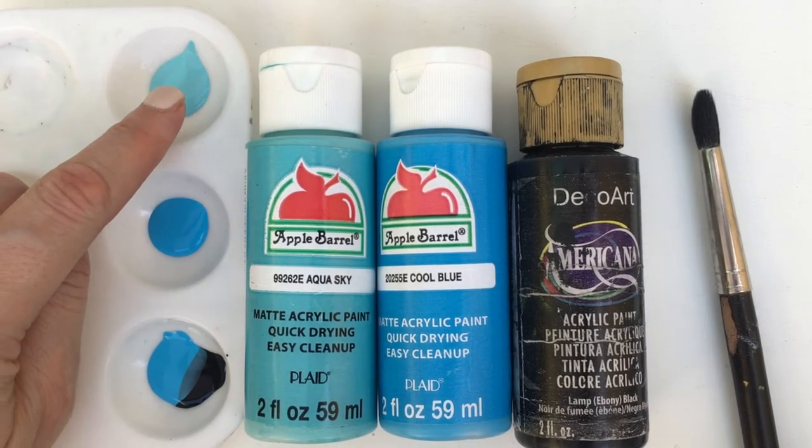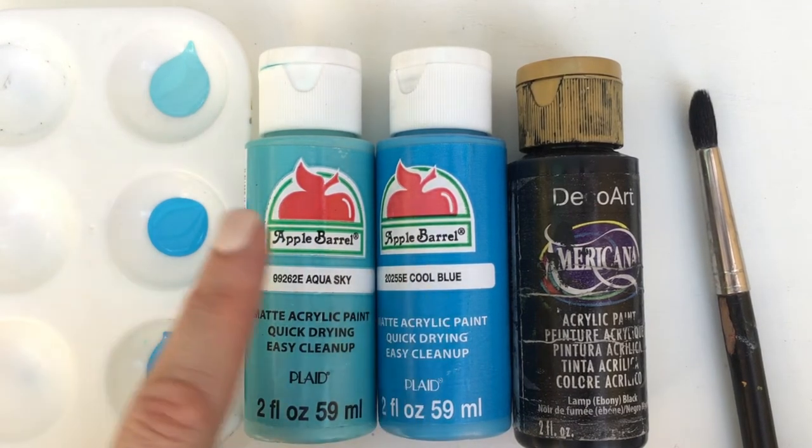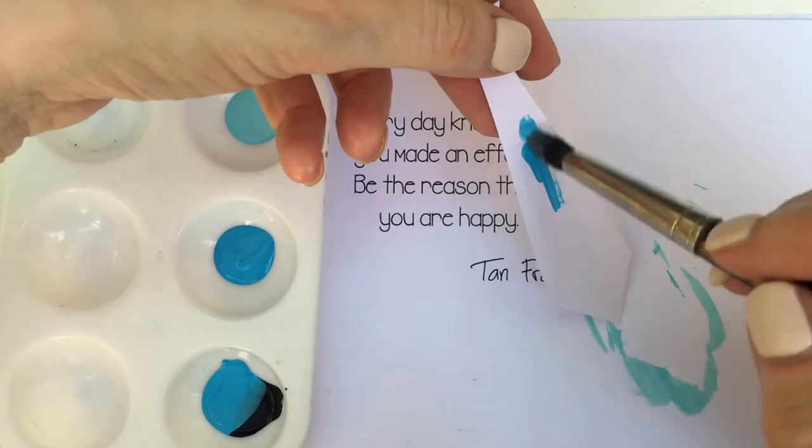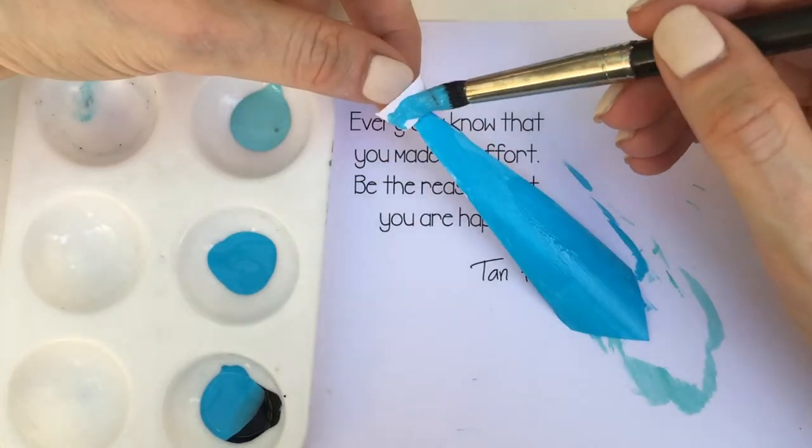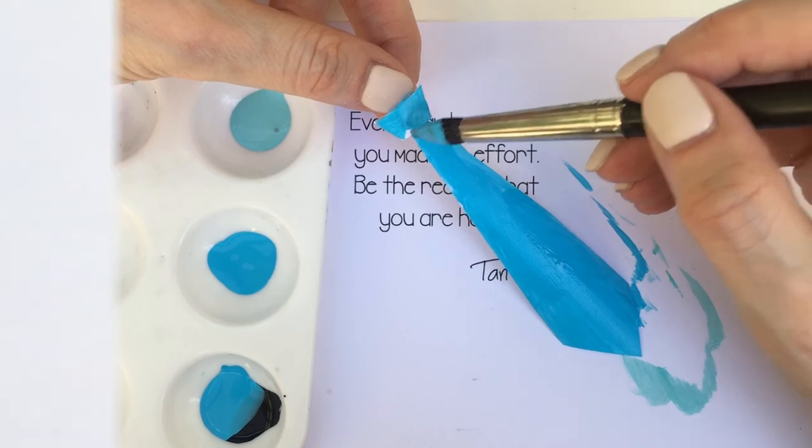I used some black paper as you saw, or you can use white paper and then color it as I'm doing right now. From these three colors, I just ended up using cool blue and painted the whole thing.